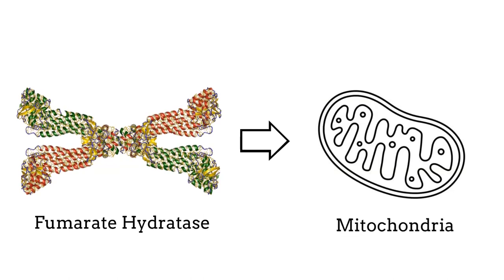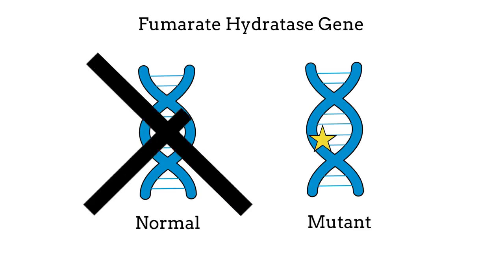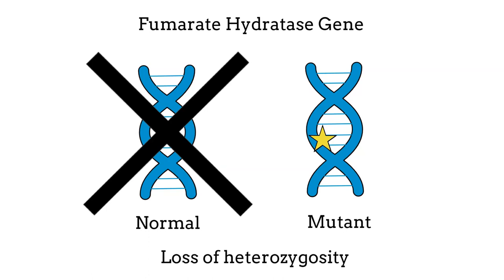If a person with HLRCC loses their only normal copy of the fumarate hydratase gene in their lifetime, a process known as loss of heterozygosity, then they're at risk of tumor development.